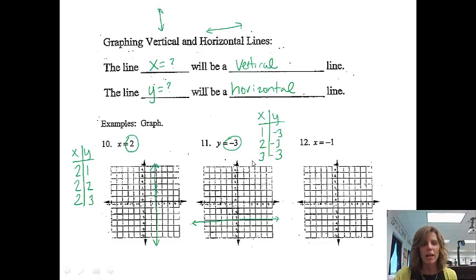So for each of these, the y has to be negative 3. So I'm going to go over 1, down 3, over 2, down 3, over 3, down 3. So notice for each of those, I did still get a horizontal line when I did that.